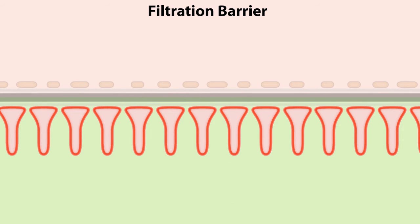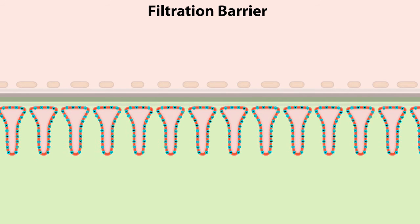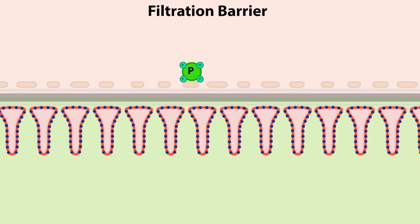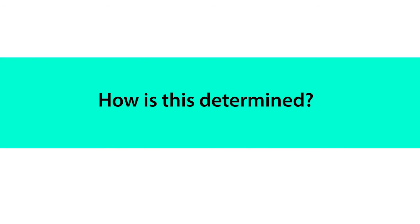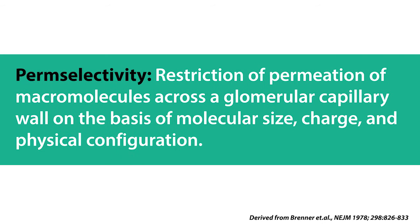The epithelial podocyte foot processes form specialized filtration slits measuring 30 to 40 nanometers in width. They express negatively charged glycoproteins throughout the cell membrane, which restrict the passage of large negatively charged molecules like plasma proteins. From this description, the filtration barrier restricts molecules based on size and charge — but how is this determined? It was determined experimentally by measuring the perm selectivity or clearance of neutral and charged dextran molecules.